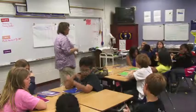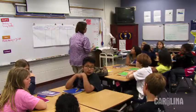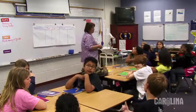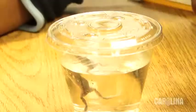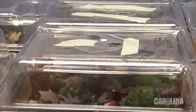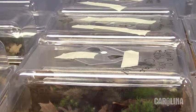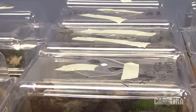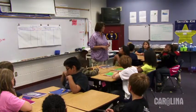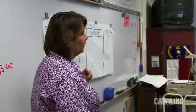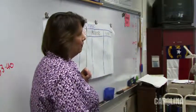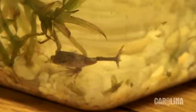We've been talking about the structures and behaviors of four different animals: the frogs, the millipedes, the fiddler crabs, and humans. What's a characteristic that we can look at for all four animals?